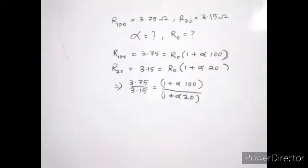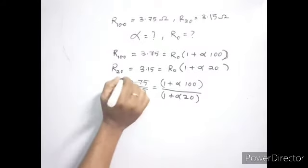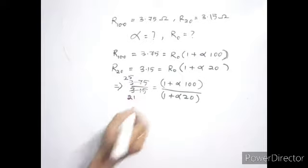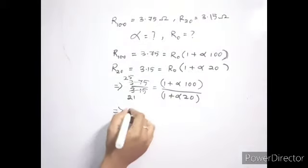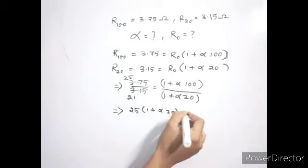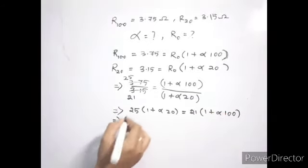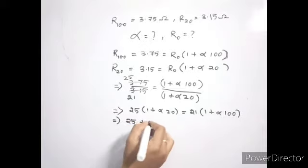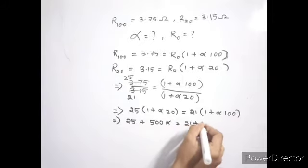Now 3.75 over 3.15 simplifies to 25 over 21. Cross-multiplying, we get 25 multiplied by 1 plus alpha times 20 equals 21 times 1 plus alpha times 100. Expanding: 25 plus 500 alpha equals 21 plus 2100 alpha.